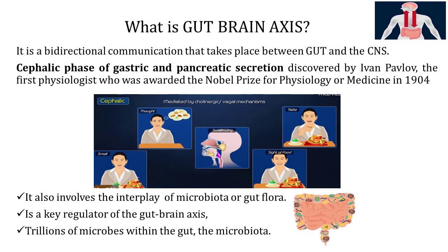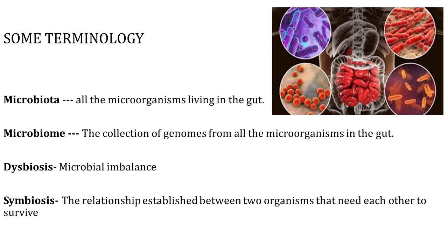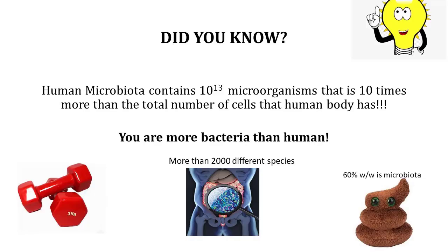Let's look at some terminologies. Microbiota refers to all the microorganisms living in the gut. Microbiome is the collection of genomes from all the microorganisms in the gut. Dysbiosis refers to microbial imbalance. And symbiosis is the relationship established between two organisms that need each other to survive. You will be surprised to know that human microbiota contains 10 raised to 13 microorganisms, which is like 10 times more than the total number of cells that the human body has. So it's like you are more bacteria than human.